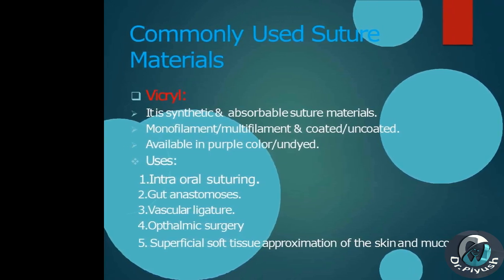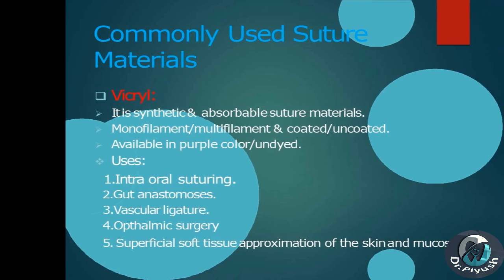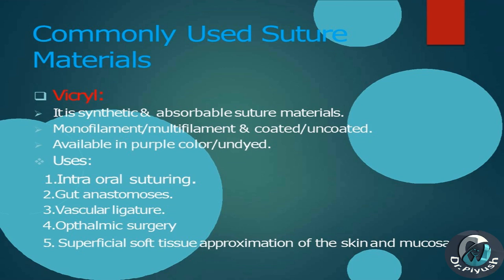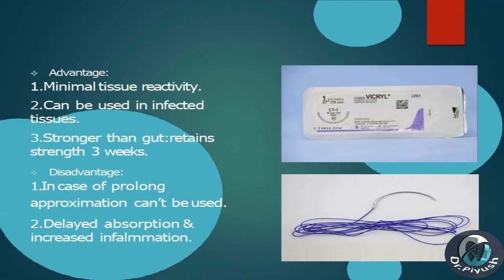Vicryl: synthetic, absorbable suture material available as monofilament or multifilament, coated or uncoated, in purple or undyed form. Uses: intraoral suturing, gut anastomosis, vascular ligature, ophthalmic surgery, superficial soft tissue approximation of skin and mucosa. Advantages: minimal tissue reactivity, can be used in infected tissues, stronger than gut — retains strength for 3 weeks. Disadvantages: in case of prolonged approximation it cannot be used; delayed absorption and increased inflammation.